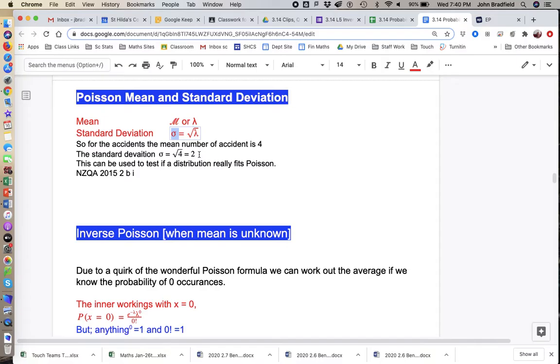So that doesn't come up a whole lot, but it is noted, and we're expected to have that in the back of our brain. It did come up on a question in 2015, and we'll look at the end of the topic at deciding whether a particular distribution fits the model. And this is one of the tests you can use to decide whether it actually fits a Poisson.